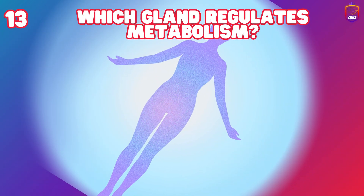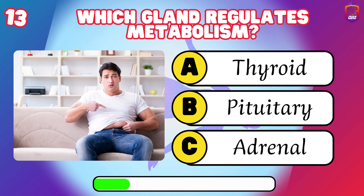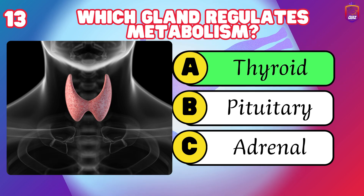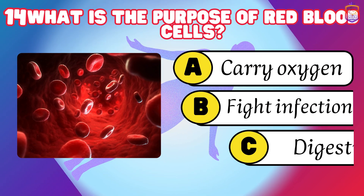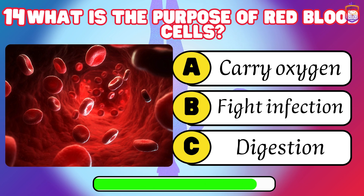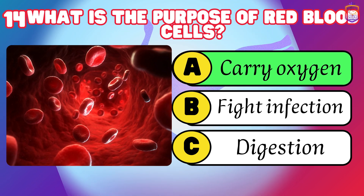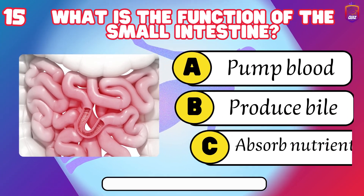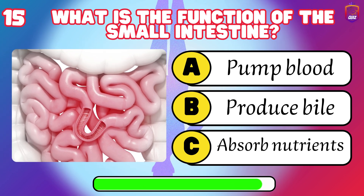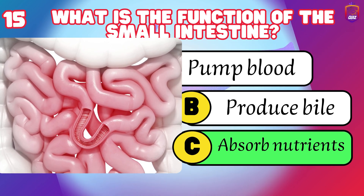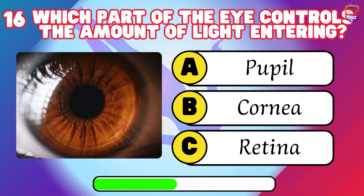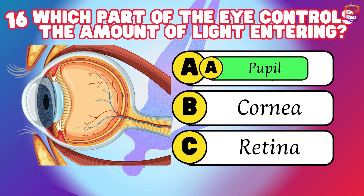Which gland regulates metabolism? What is the purpose of red blood cells? Carry oxygen. What is the function of the small intestine? Absorb nutrients. Which part controls the amount of light entering? Pupil.